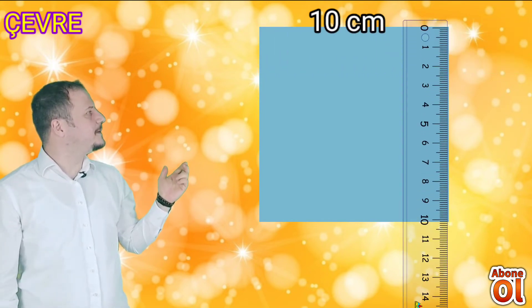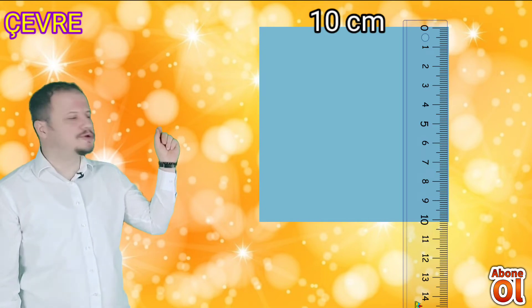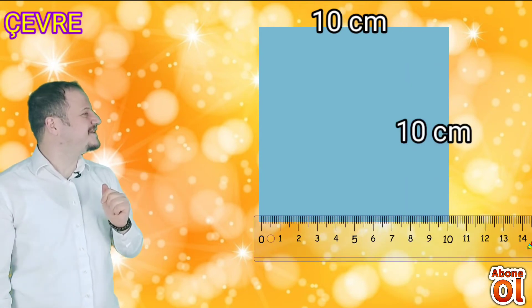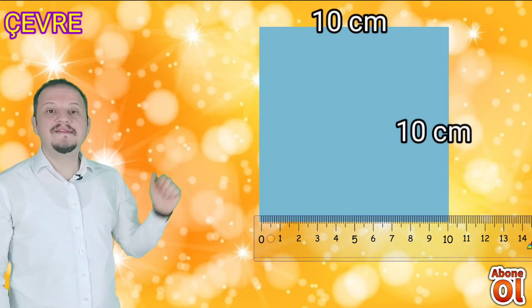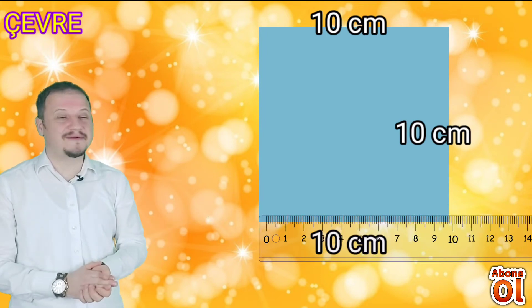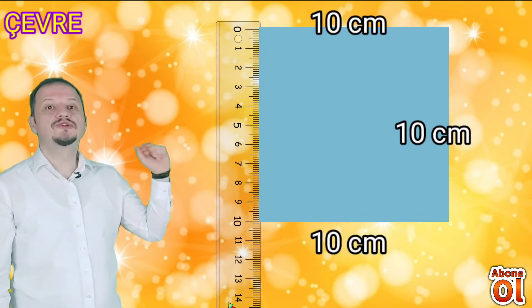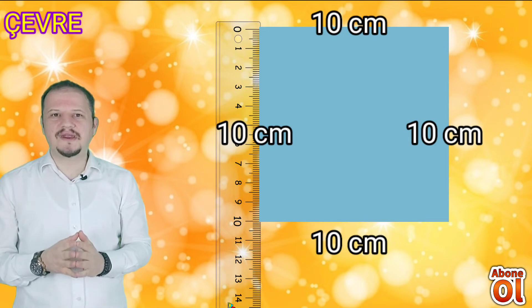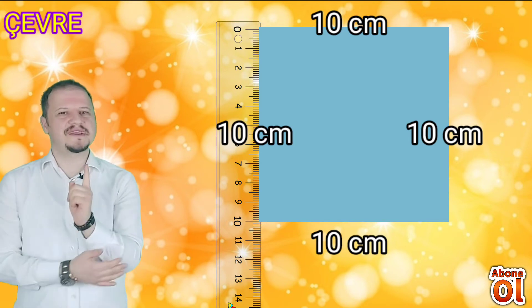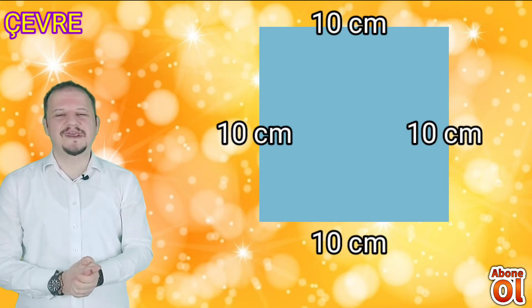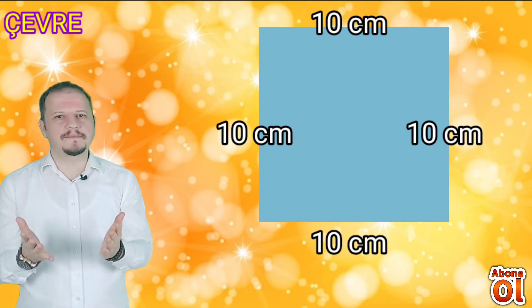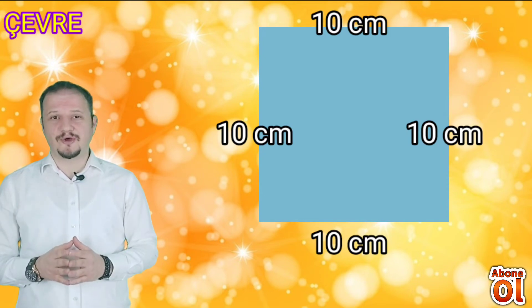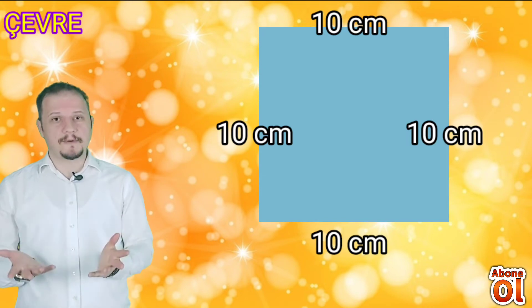Diğer kenarını da hesaplayalım. Sıfır noktasını getiriyoruz ve diğer köşede yine 10 santimetre olduğunu görüyoruz. Diğer kenarı da hesaplayalım: bir köşesini sıfır noktasına getiriyoruz — yine 10 santimetre. Ve son kenarında da uzunluğu aynı çıktı: 10 santimetre. Yani bu karenin bütün kenarlarının uzunlukları birbirine eşitmiş. Karenin çevre hesaplamasını kenarlarının uzunlukları toplamıyla ya da kısa yoldan bir kenarın uzunluğuyla 4'ün çarpımı şeklinde hesaplarız.